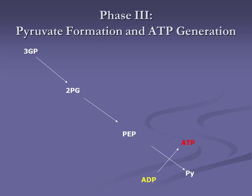Pyruvate has three carbons. Two are produced per glucose molecule. Two NADHs are produced per glucose molecule. Net ATP produced is two per glucose. In glycolysis, the gross production is four ATP — two produced in phase two and two in phase three — but we had to use two to get it started in phase one, so our net drops to two.